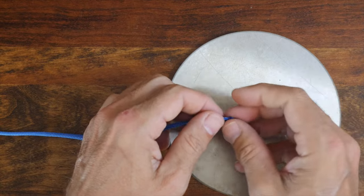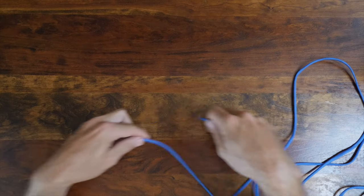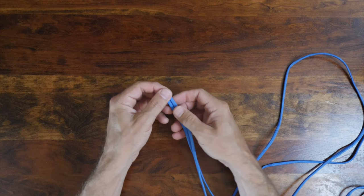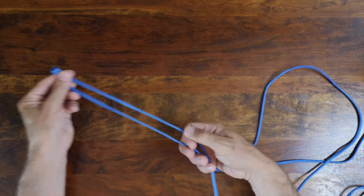Now that you've melted the ends, it's time to find the center of your length of paracord. You can do this easily by bringing the two ends together and then running the length through your hand until you find the halfway point.